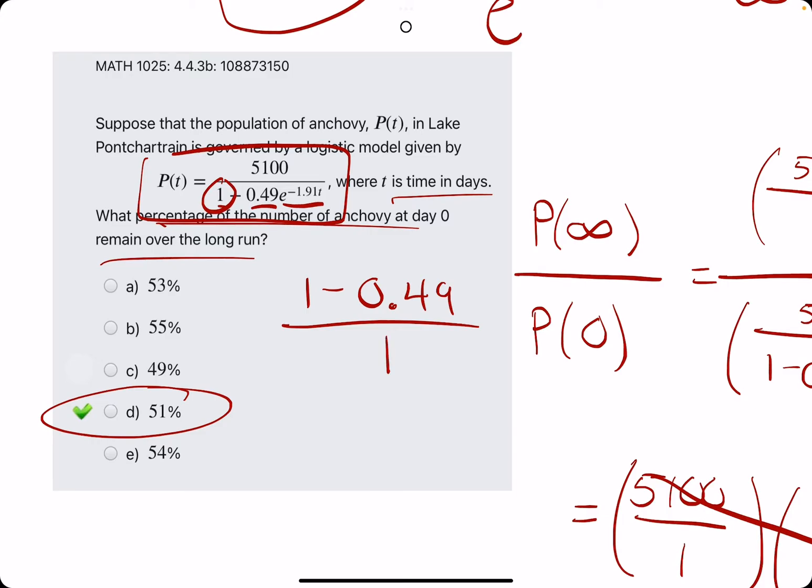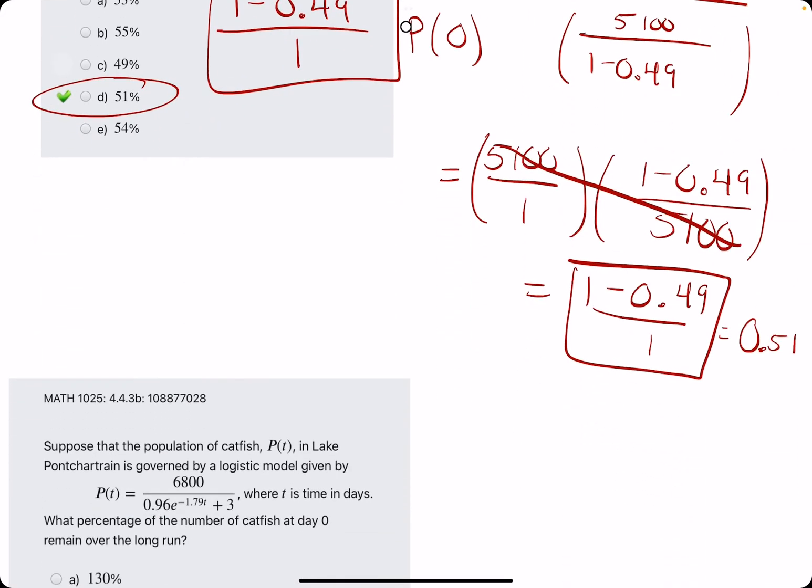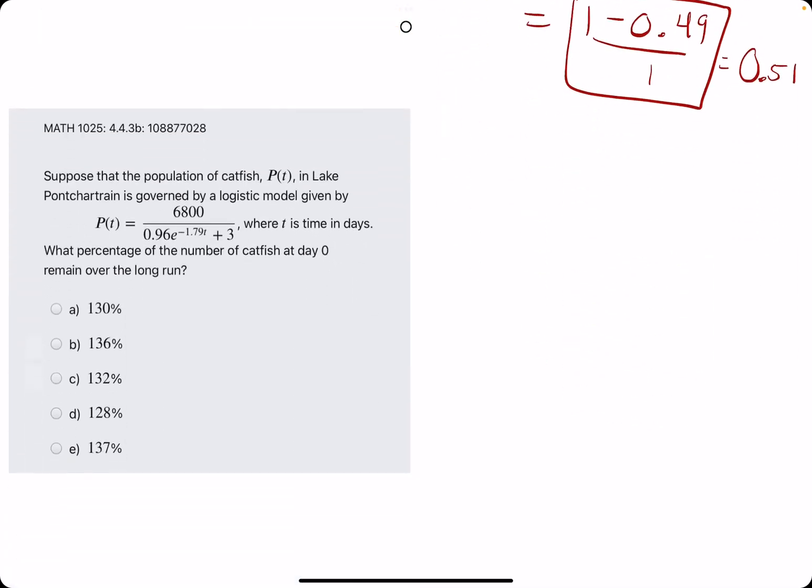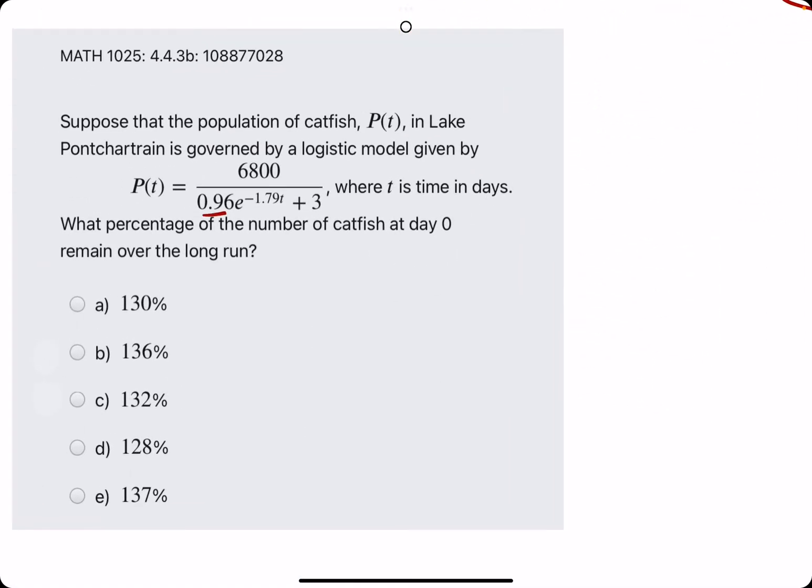So, we'll do 1 minus 0.49 and then we'll divide by the number that's not attached to the e term. So, 1. And, ultimately, that's what we calculated down here. So, again, if we apply it here, we identify the two numbers in the bottom, perform the operation between them that is presented,